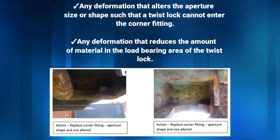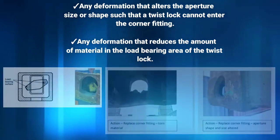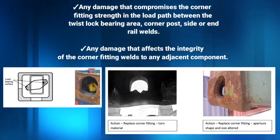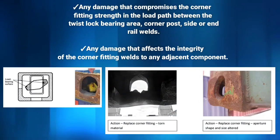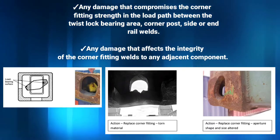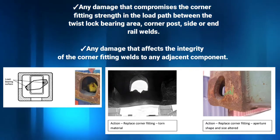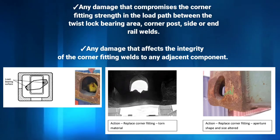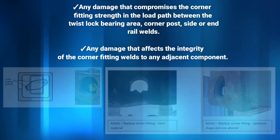Any deformation that reduces the amount of material in the load bearing area of the twist lock. Any damage that compromises the corner fitting strength in the load path between the twist lock bearing area, corner post, side or end rail welds. Any damage that affects the integrity of the corner fitting welds to any adjacent component.